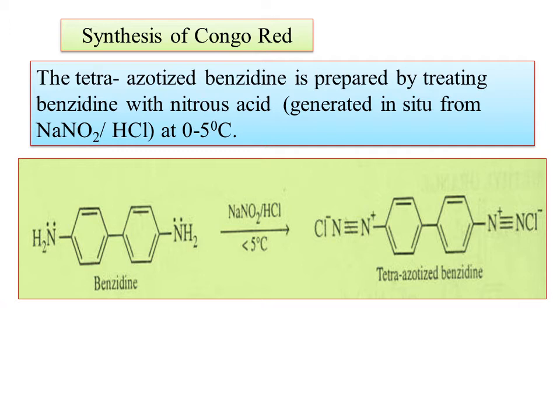We need to use the in-situ reagent. We cannot store them — some reagents in the lab we can store, like HCl, NaOH, and sulfuric acid. We need to prepare dilute solutions. We need NaNO2 plus HCl to prepare nitrous acid. We need to use 0 to 5 degrees centigrade. Instead of taking benzene, we need benzidine — benzene attached to both NH2 groups. It is a diphenyl compound; in the para position, two groups are attached. Hence it is benzidine.